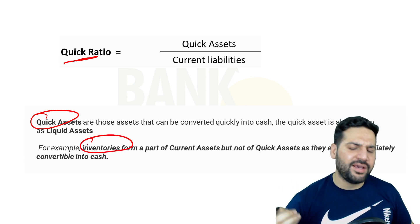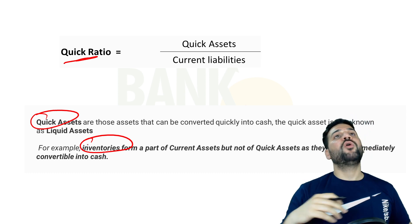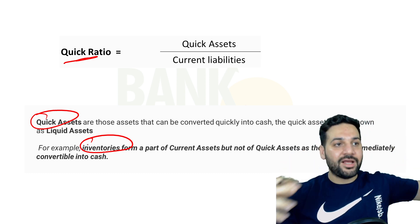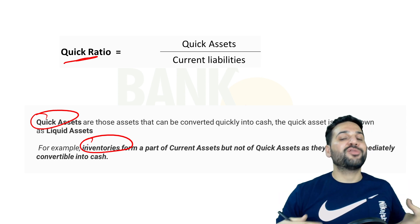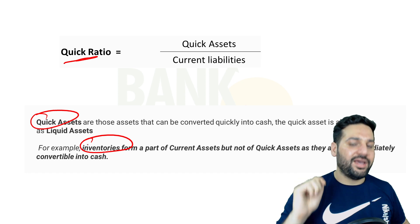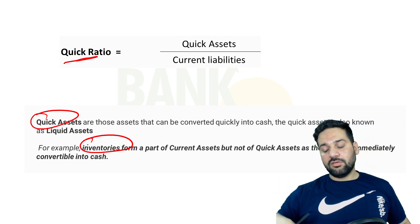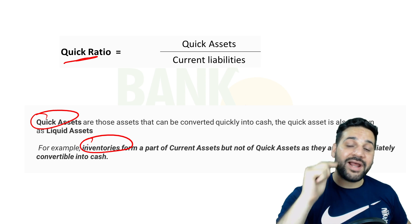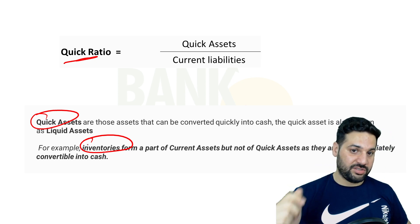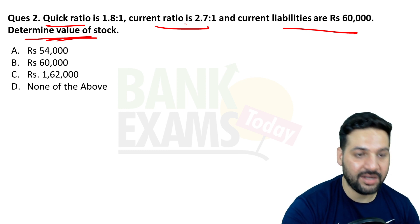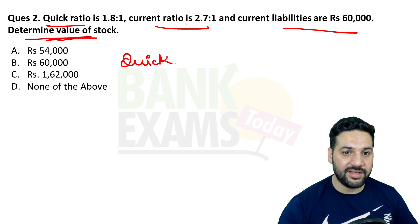Current assets include inventory, but inventory is not a quick asset because you cannot convert inventory to cash within one day without causing much loss. Quick assets are cash in hand, investments, or cash at bank — all can be converted to cash within one day. So that is the difference between quick assets and current assets.